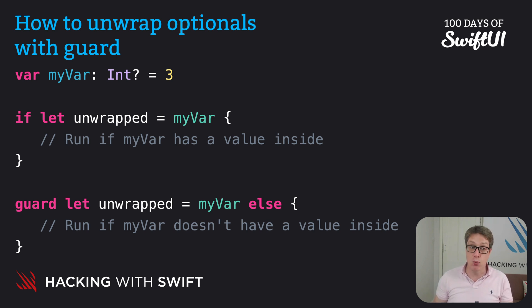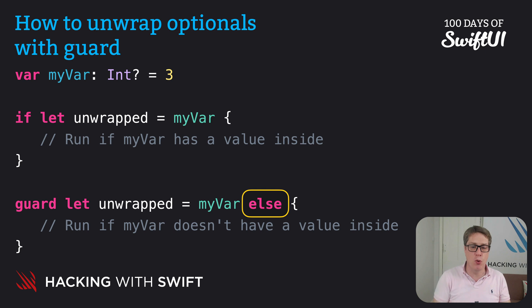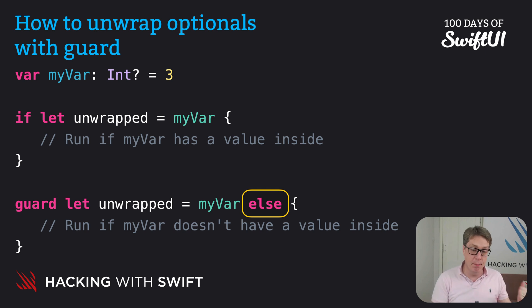That explains why guard let uses the else keyword — check that we can unwrap the optional, but if we can't, then handle that case. Now that might sound like a very small distinction, but it has important ramifications. What guard does for us is provide the ability to check whether our program state is what we expect, and if it isn't, bail out.